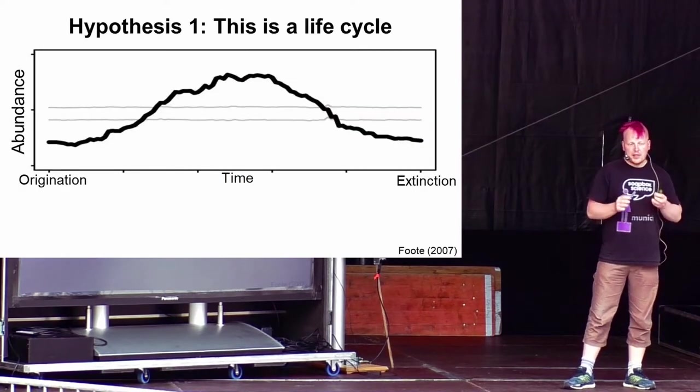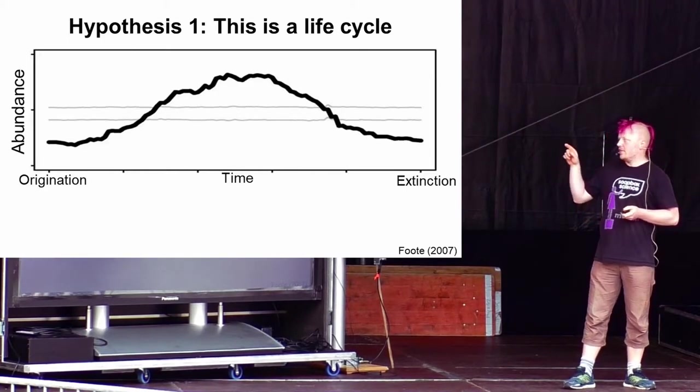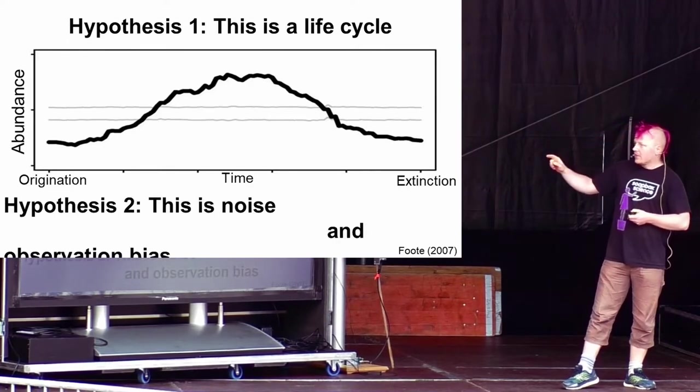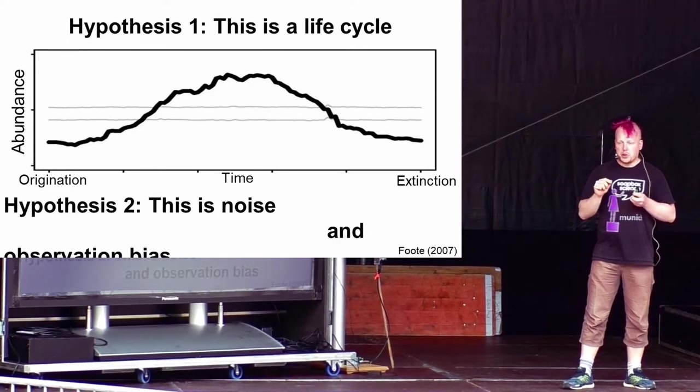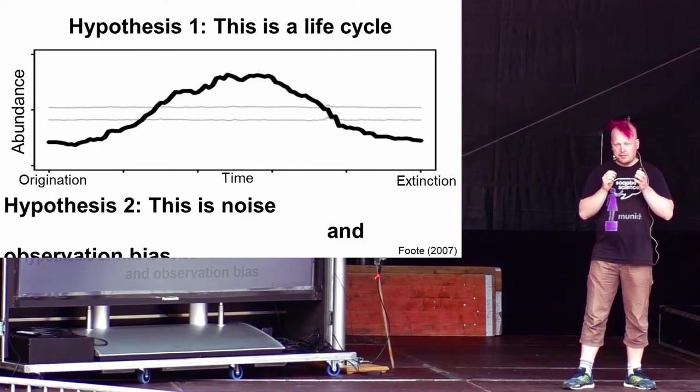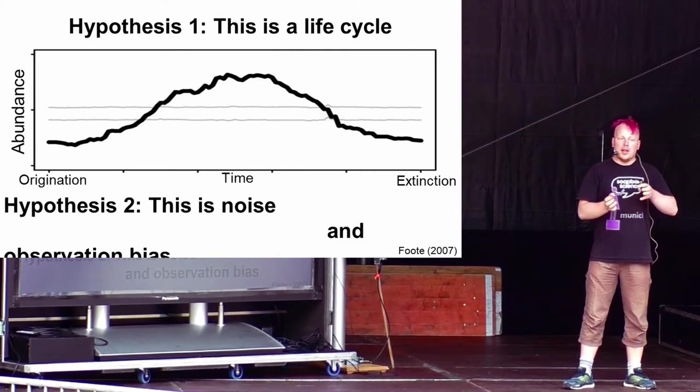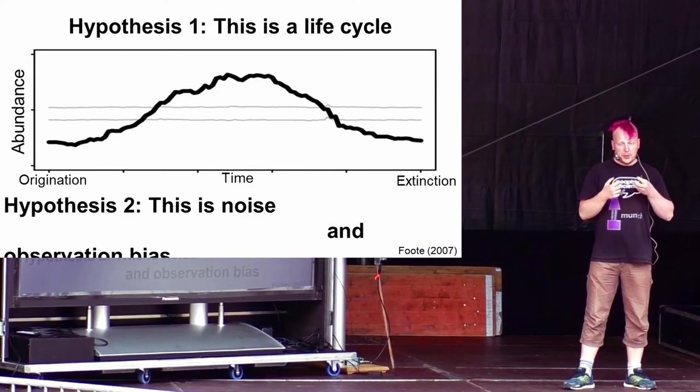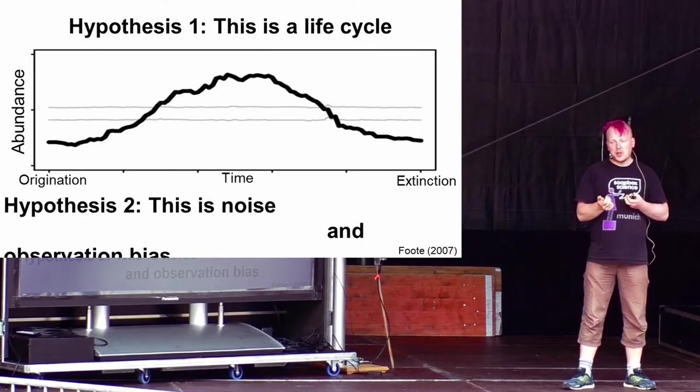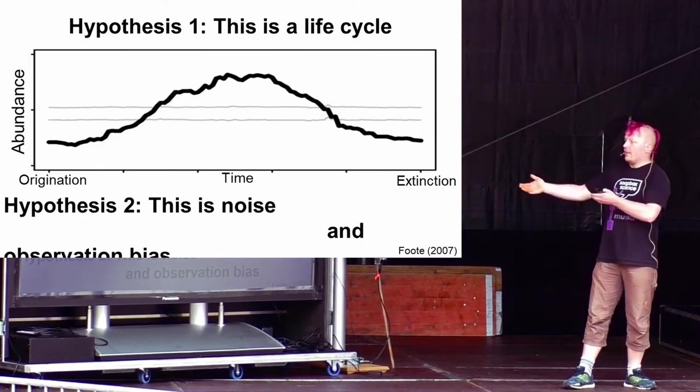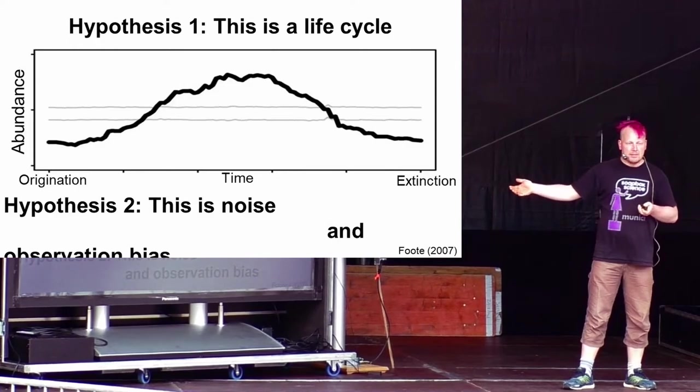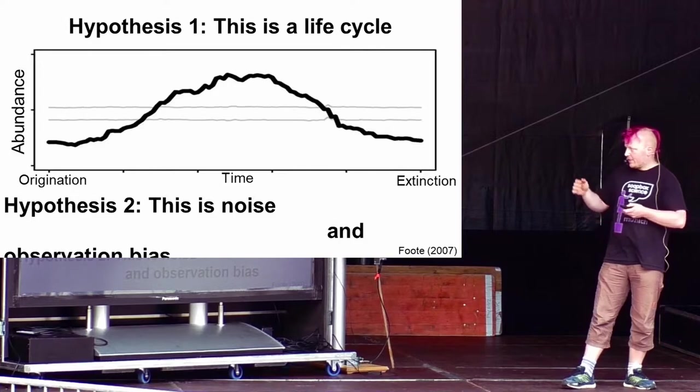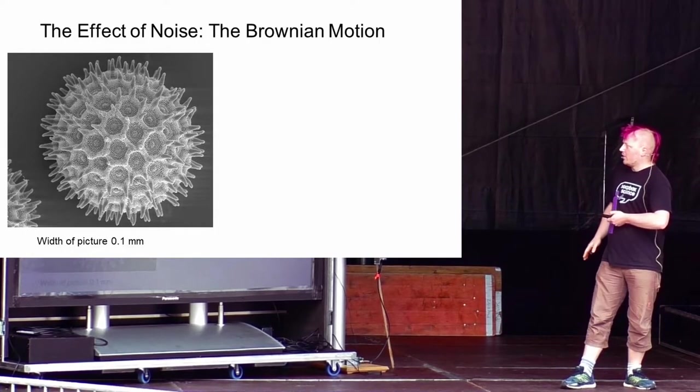The thing is, this is based on the hypothesis that this is actually a life cycle. When I looked at this, I found a second hypothesis which we can use to explain this pattern, this very symmetrical pattern, and that argues that this is actually not a life cycle, but it's rather an expression of purely noise and an observation bias that we introduce, simply because everything we look at is already dead. Of course, it has to drop before it's going extinct, right?